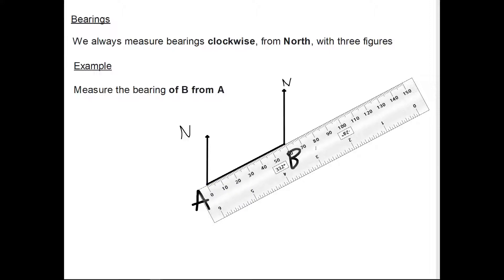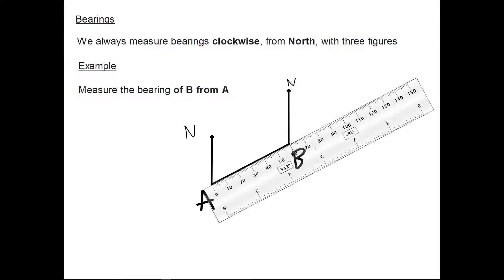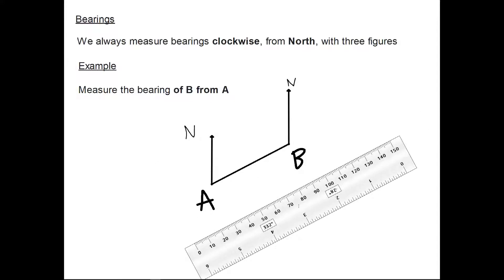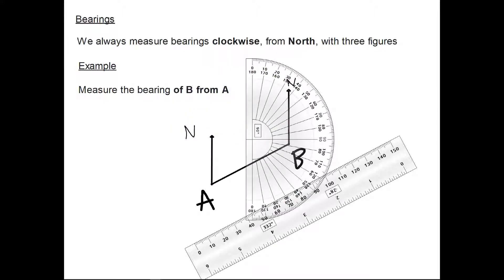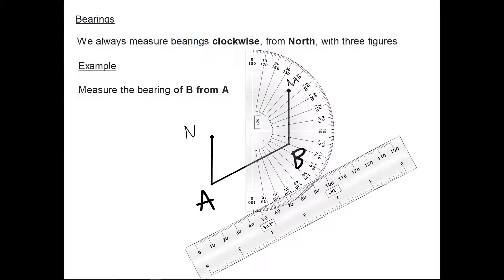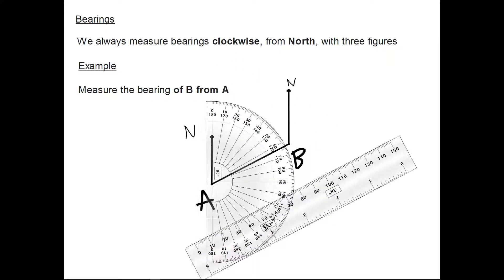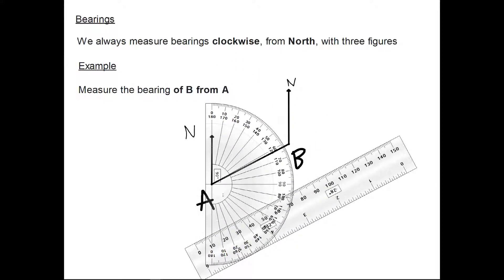Then I'm going to get my protractor. Because I want the bearing of B from A, I need to start at A. So I'm going to put my protractor exactly so the zero is lined up with the north arrow on A. Then I need to measure clockwise — following the outside of the protractor — and the angle between the north arrow from A and the line joining A and B is 62 degrees.